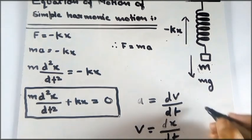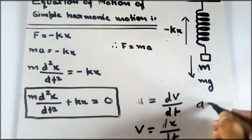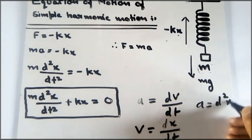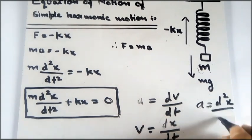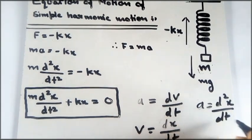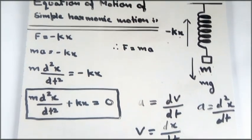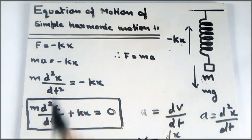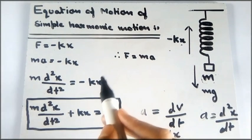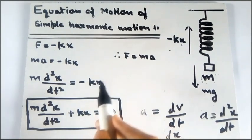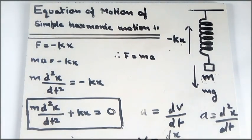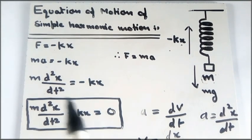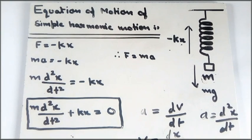So acceleration is the double derivative of displacement with respect to time. Substituting this into ma = -kx gives m(d²x/dt²) = -kx, which is the equation of motion of simple harmonic motion.